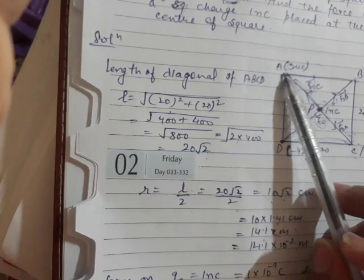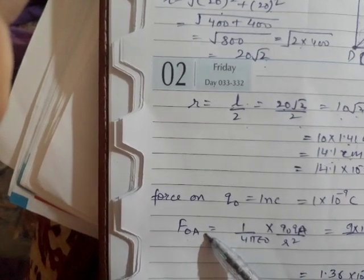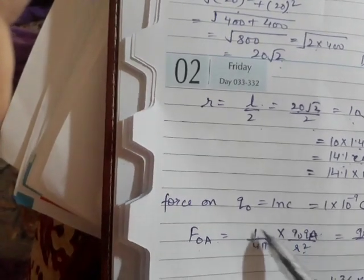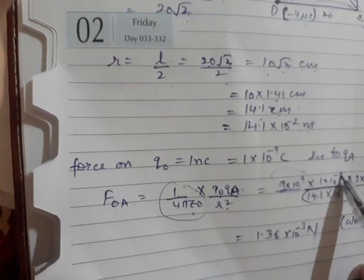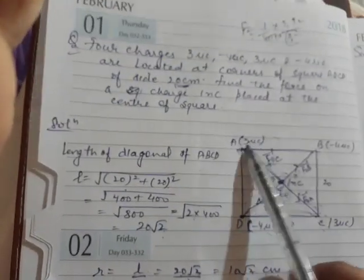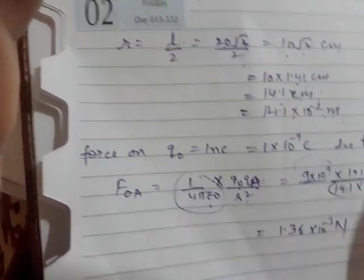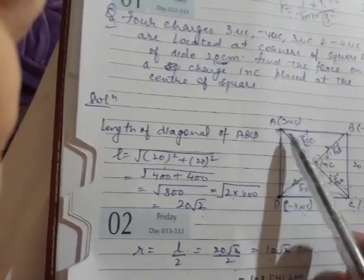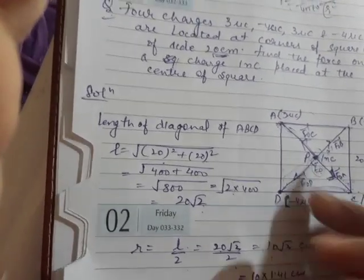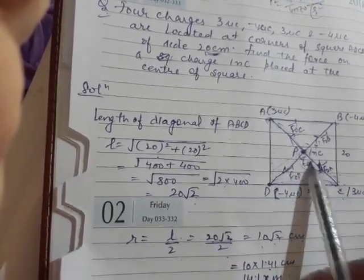Now find the force on Q naught due to the charge at A, which is 3 micro coulomb. F_A = (1/4πε₀) × Q naught × Q_A / r² = 9×10⁹ × (1×10⁻⁹) × (3×10⁻⁶) / (14.1×10⁻²)². Solving this gives the magnitude. For direction: both charges are positive, so they repel — the force F_A acts along the line from A to center P, that is along PA direction away from A.